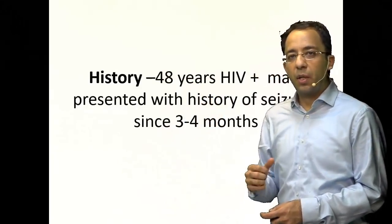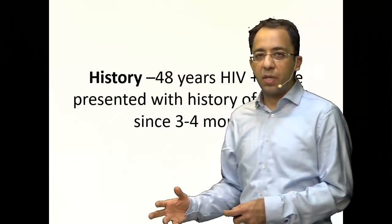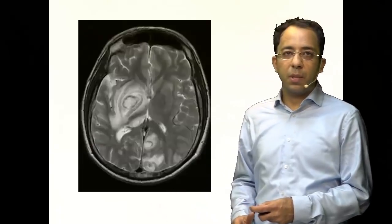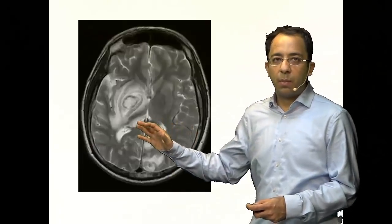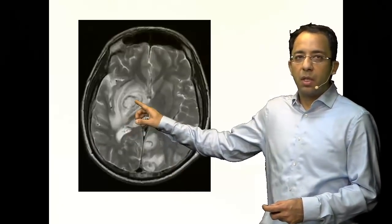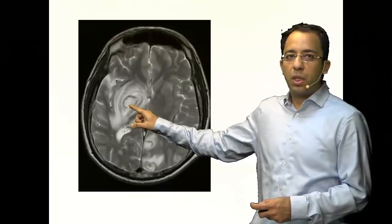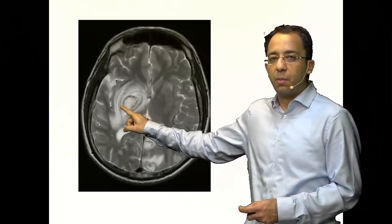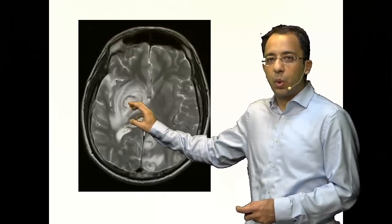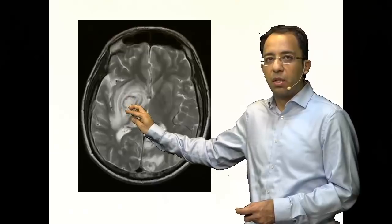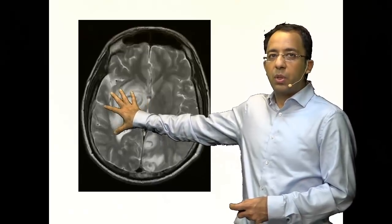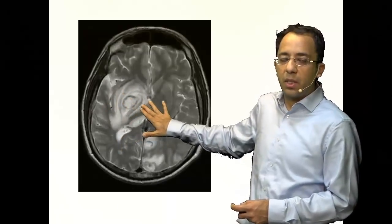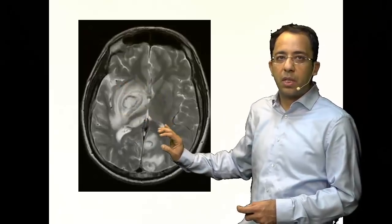Looking at the MRI image — this is a T2-weighted image. You can see a T2 hyperintense lesion which has a hypointense rim around it, so it is a bright lesion with a dark rim around it, with surrounding edema.